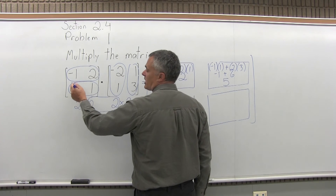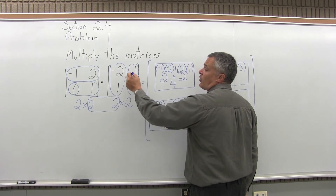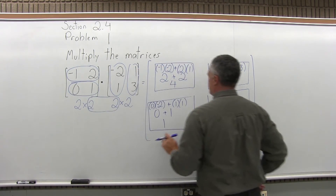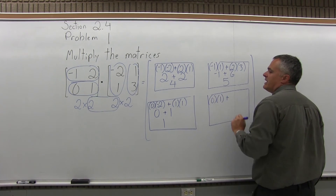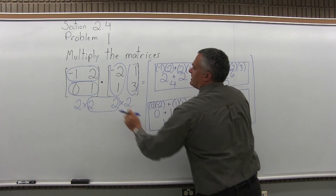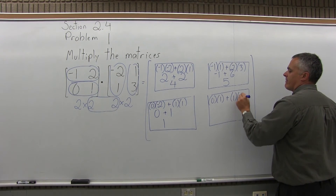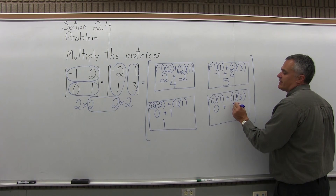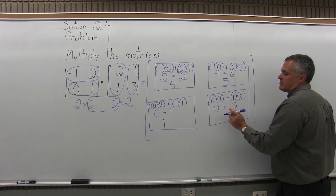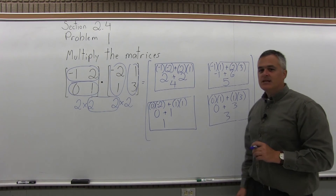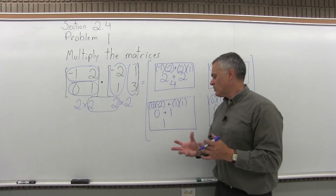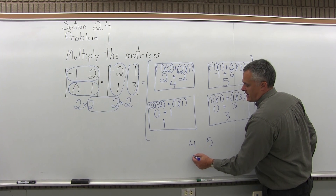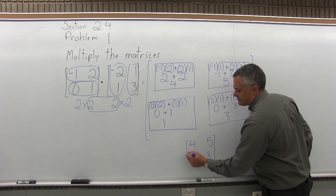One more box to fill: I'm multiplying the bottom row—0, 1 from the first matrix—times the second column—1, 3 from the second matrix. First times first is 0 times 1, and second times second is 1 times 3. 0 times 1 is 0, and 1 times 3 is 3. 0 plus 3 is 3. Typically you don't leave it with all that work showing, so our final answer written as one small matrix is 4, 5 in the top row and 1, 3 in the second row. And that's the answer.